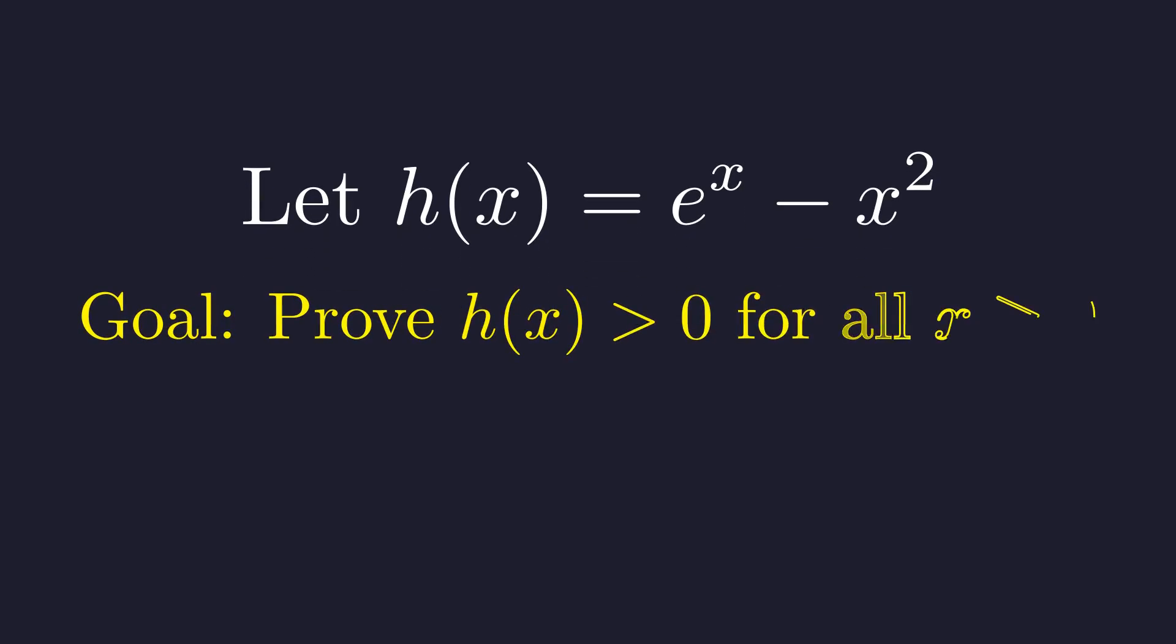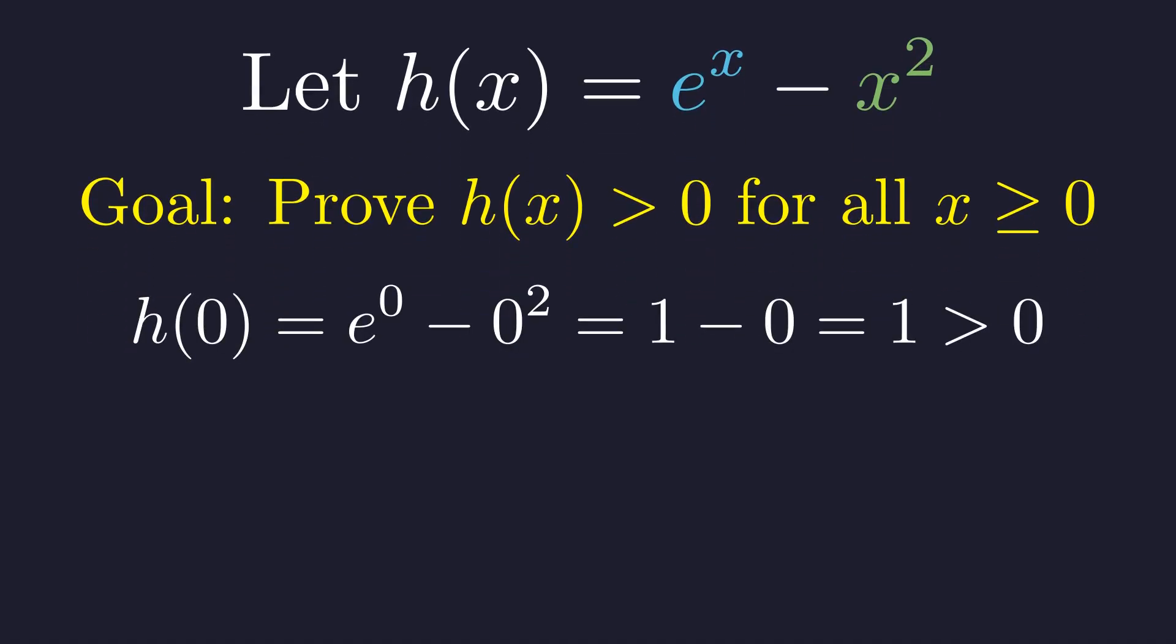Our goal is to show that h of x is always positive when x is non-negative, meaning it never hits 0. First, let's check the starting value. At x equals 0, e to the 0 is 1, and 0 squared is 0. So our function starts positive at the value 1. Now, if we can show that h of x is strictly increasing on this interval, we're done. The function will stay positive forever.